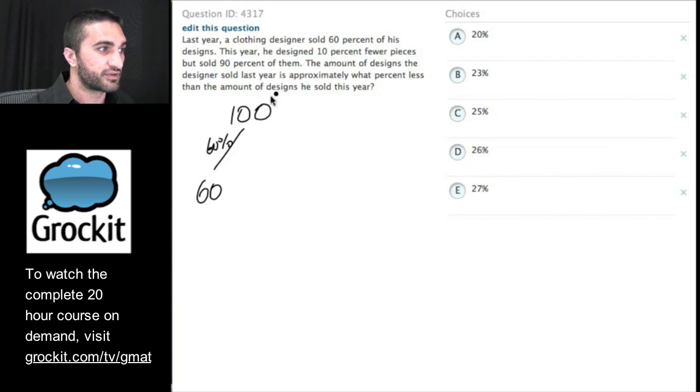This year, he designed 10% fewer. So 10% fewer. Well, 10% fewer of 100 is 90. That was pretty straightforward. And sold 90% of them. So we want 90% of 90. So 9 times 9, 81.